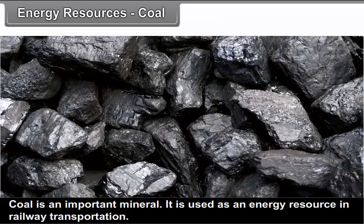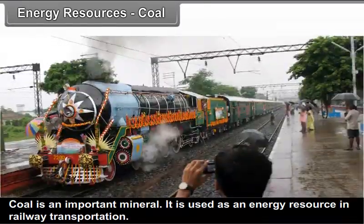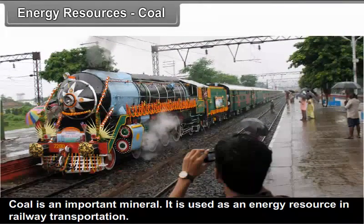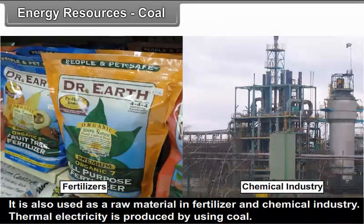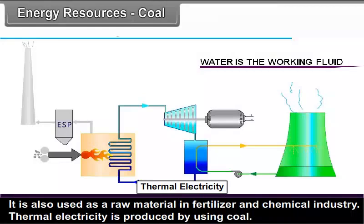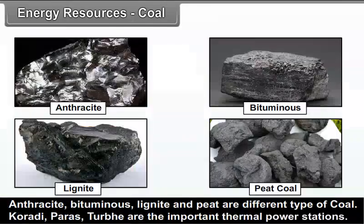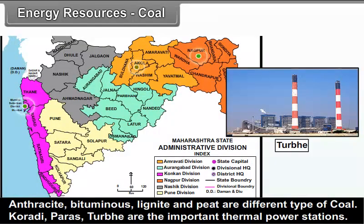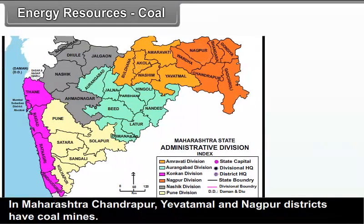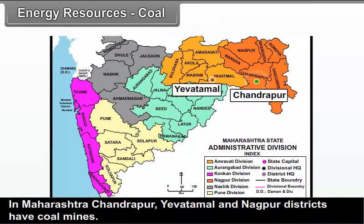Energy resources — Coal: Coal is an important mineral used as an energy resource in railway transportation. It is also used as a raw material in fertilizer and chemical industries. Thermal electricity is produced using coal. Anthracite, bituminous, lignite and peat are different types of coal. Koradi, Paras and Turbe are important thermal power stations. In Maharashtra, Chandrapur, Yavatmal and Nagpur districts have coal mines.